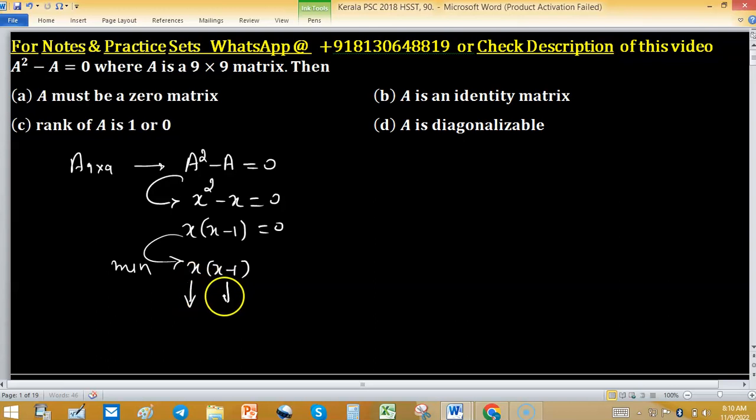As you can consider these are linear, that's why matrix A is diagonalizable. Option D is correct.